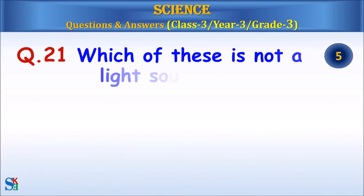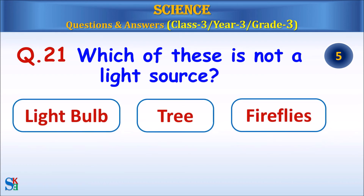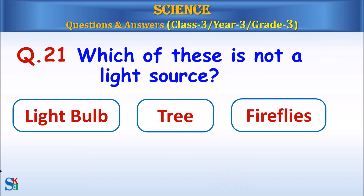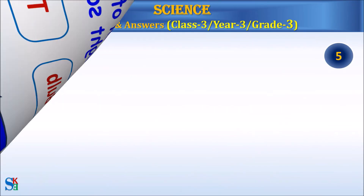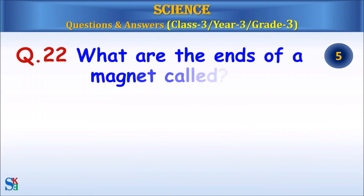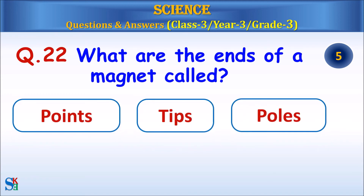Question 21: Which of these is not a light source — light bulb, tree, or fireflies? Answer: Tree. Question 22: What are the ends of a magnet called?